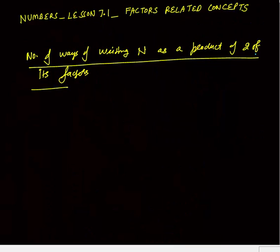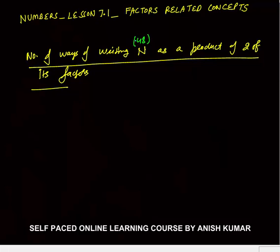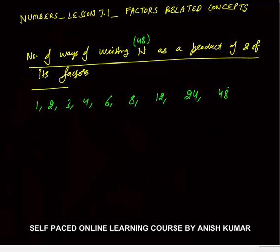Next important concept: number of ways of writing N as a product of two of its factors. Let N = 48. First I will list all factors of 48 in ascending order: 1, 2, 3, 4, 6, 8, 12, 16, 24, 48 — that's 10 factors.